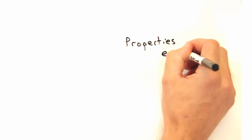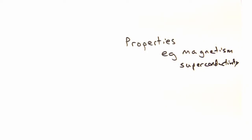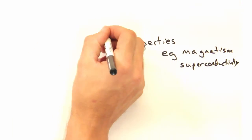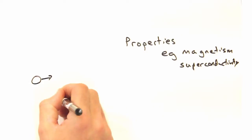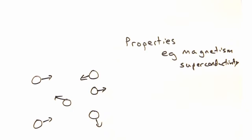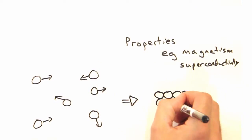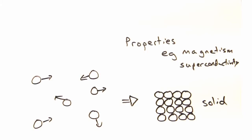Often in Solid State, we care about properties, stuff like magnetism and superconductivity. But to get to these properties, we need to understand the underlying structure of solids. So slow down. Before we even get to talk about structure and properties, we need to understand why atoms coalesce into solids in the first place.